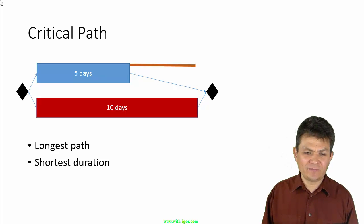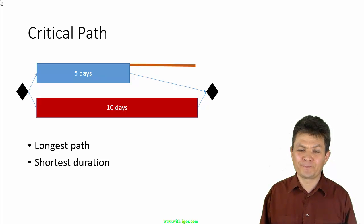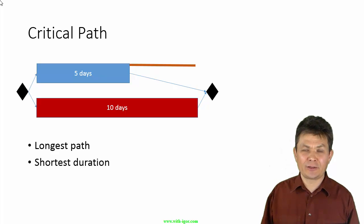Now, what it means, let's say, somebody who is working on the task that is blue task here, 5 days, says they are not going to be done on time. We realize that we have this extra time that they can spend without impacting the schedule.